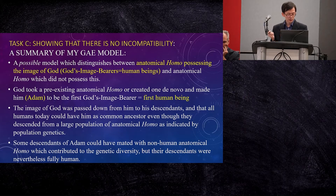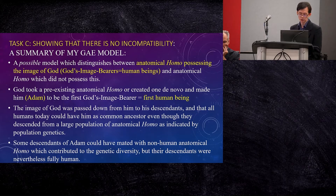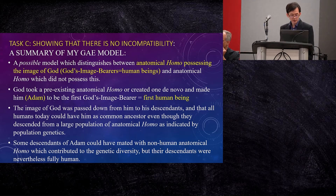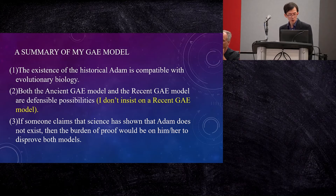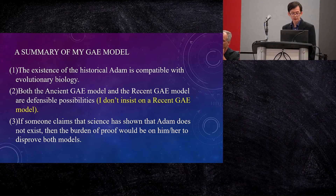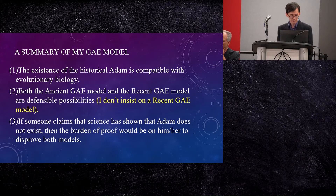On my model, some descendants of Adam could have mated with non-human anatomical homo, which contributed to the genetic diversity, but their descendants were nevertheless fully human. These are the key elements of my model. I argue that the existence of a historical Adam is compatible with evolutionary biology as well as evolutionary population genetics.